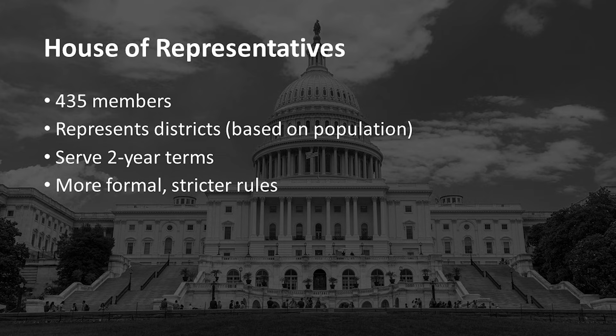We have a bicameral legislature made up of the House of Representatives and the Senate. The House has 435 members. Members represent districts, and the House is based on population. Each member serves a two-year term, so they are constantly up for re-election. The House is, in general, more formal with stricter rules than the Senate.